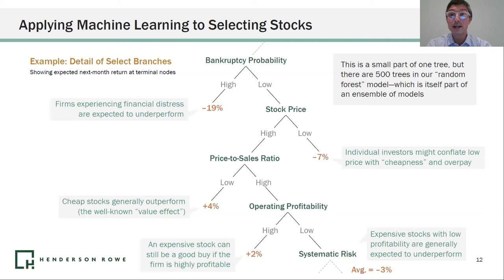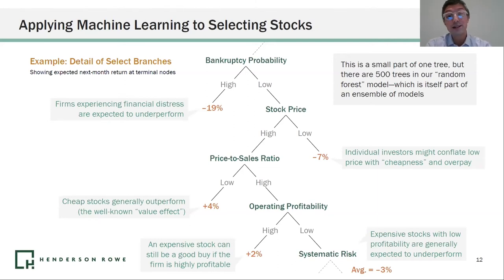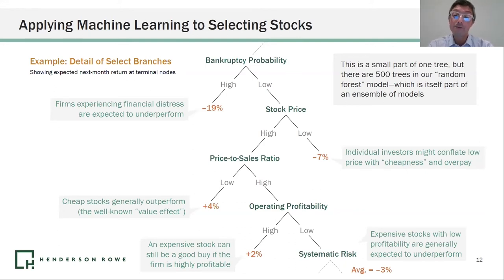Even if a company has a high price-to-sales ratio, if they're really good at converting those sales into earnings, it might still be a good investment. So if it's got high profitability, the model predicts positive returns. If it's got low profitability, we ask a bunch of other questions — but on average, stocks with low profitability that are very expensive tend to produce negative returns.